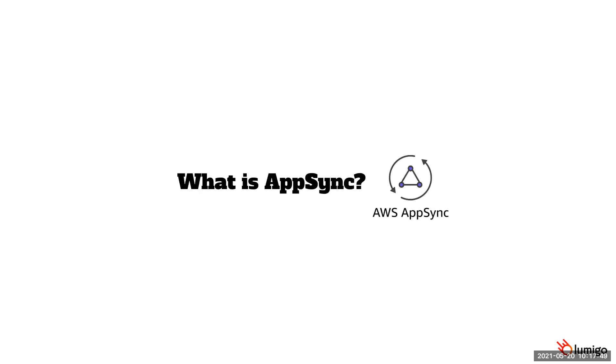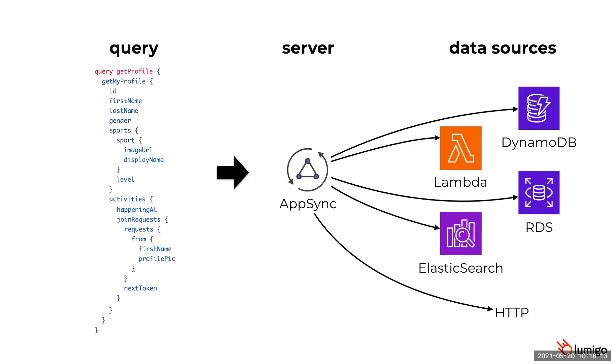GraphQL also addresses one of the pain points of using NoSQL databases like DynamoDB, where there are no joins — GraphQL and by extension AppSync takes care of all of that for you. All things considered, GraphQL makes it much easier to build data-driven applications and enables front-end teams to quickly iterate on product and user experience. AppSync is a scalable, performant, fully managed GraphQL server provided by AWS that auto-scales and requires no servers or containers to manage, with multi-AZ redundancy out of the box.